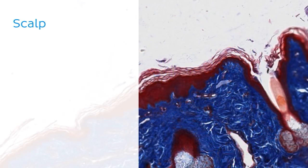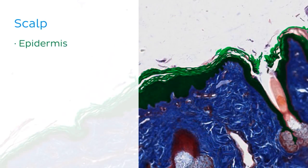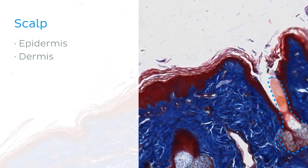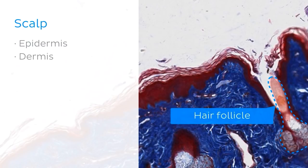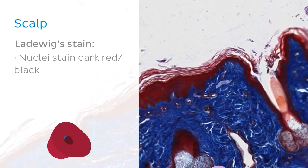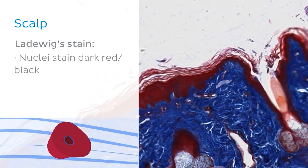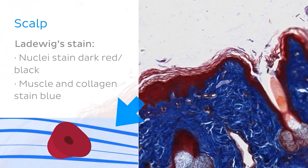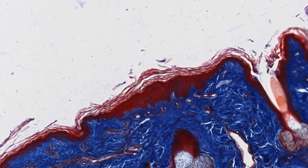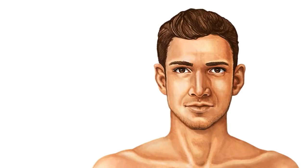This image is a histological section of the scalp with the epidermis at the top and the dermis below. As you can see, we've managed to cut longitudinally through a hair follicle. This section is stained with a special solution called Laidwig's stain or Laidwig's trichrome, which is used to visualise connective tissue. With this staining method, nuclei stain dark red-black, muscle and collagen stain blue, and cytoplasm stains red. Familiarising yourself with these colours should help you understand what you're seeing.